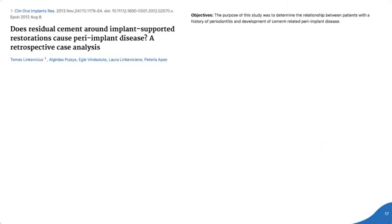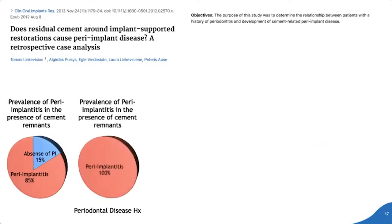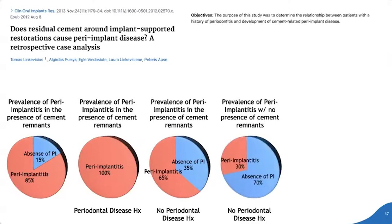A retrospective case analysis by Linkovicius et al. examined whether residual cement around implant-supported restorations causes peri-implant disease. Results showed peri-implantitis occurred 85% of the time if cement remnants were present; for patients with a history of periodontal disease, it occurred 100% of the time with cement remnants. Even without periodontal history, peri-implantitis occurred 65% of the time when cement was left behind, and 30% with no cement remnants.